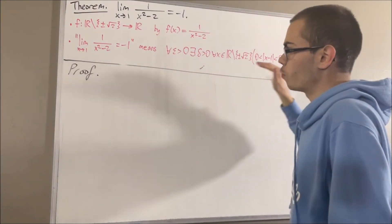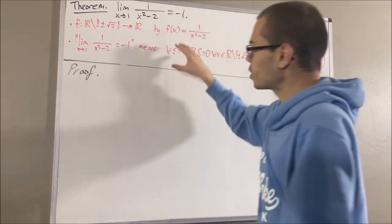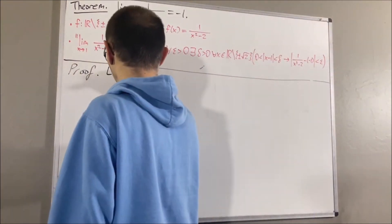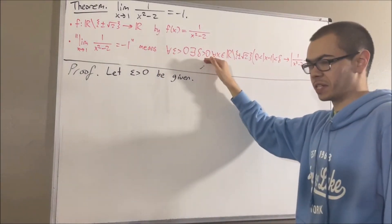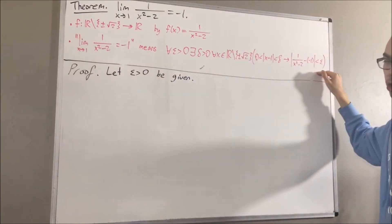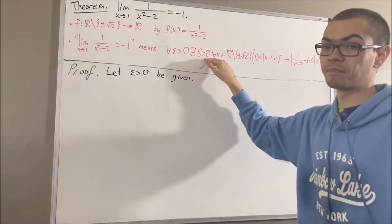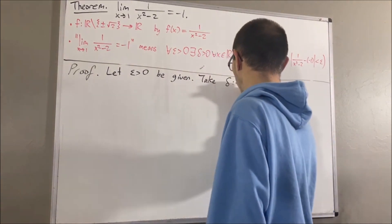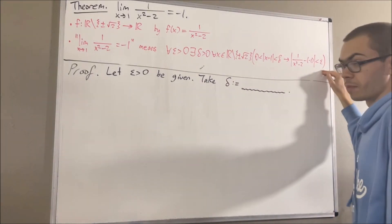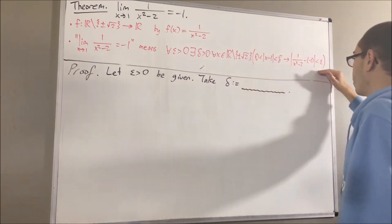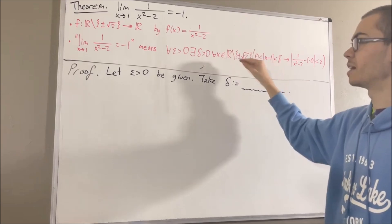Since we're trying to prove a statement about every epsilon greater than 0, let's give ourselves an arbitrary epsilon greater than 0. The whole goal from here is to find a delta greater than 0 that makes this statement true. Let's pretend we've already figured out what to choose delta to be, and since we're trying to prove a statement about all x in the domain of our function, let's give ourselves an arbitrary x in the domain.